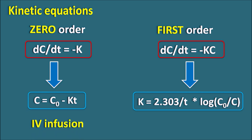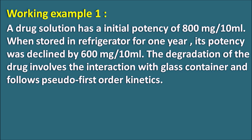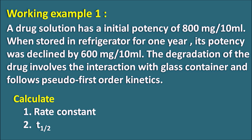When a drug is administered by IV infusion it follows zero order kinetics of absorption. Most drugs administered are eliminated from the body through first order kinetics. Now let us see the calculations involved with first order kinetics. Working example 1: A drug solution has an initial potency of 800 mg per 10 ml. When stored in the refrigerator for 1 year its potency declined by 600 mg per 10 ml. The degradation follows pseudo first order kinetics. Calculate the rate constant and half-life of the drug.